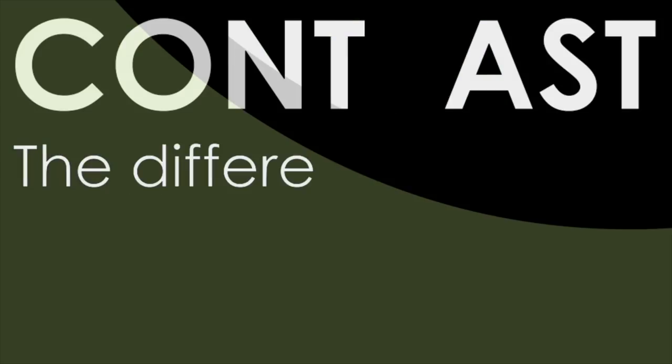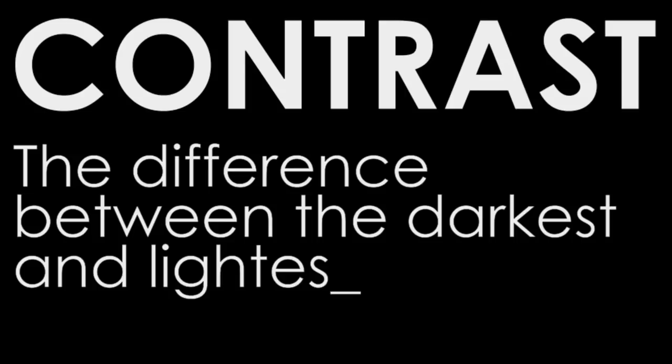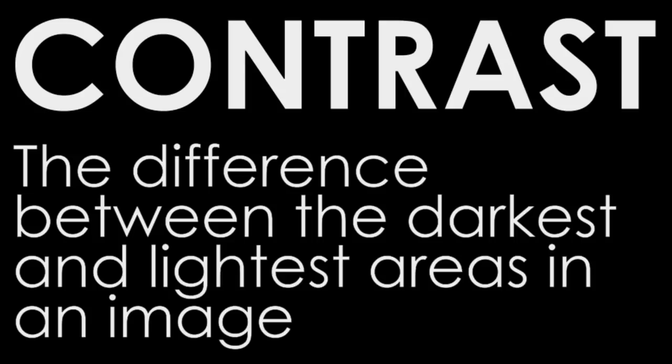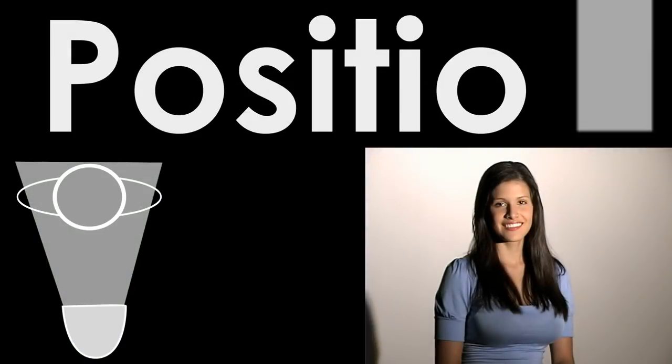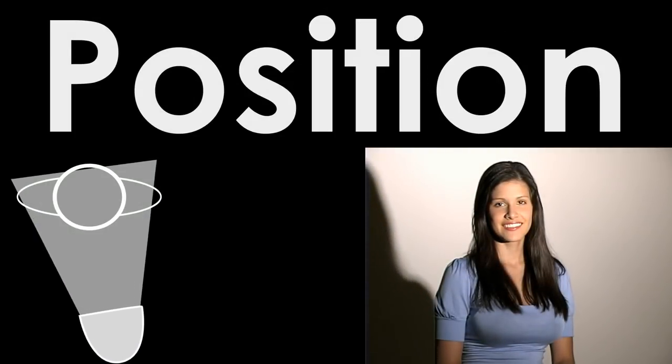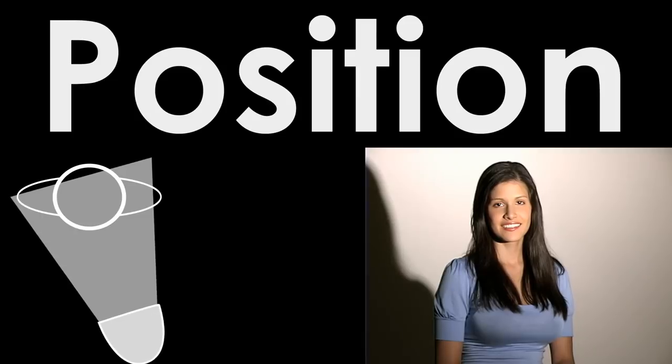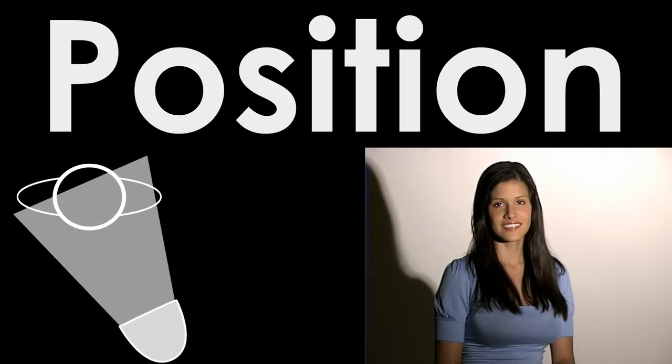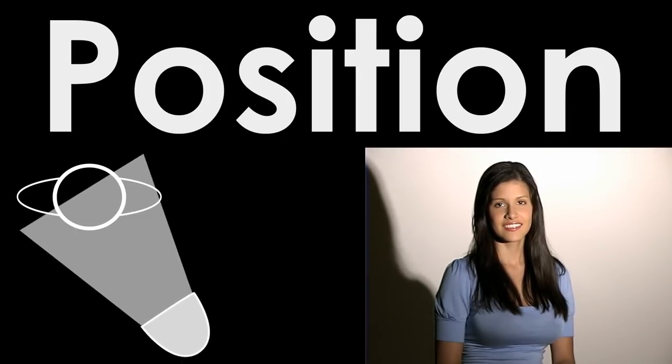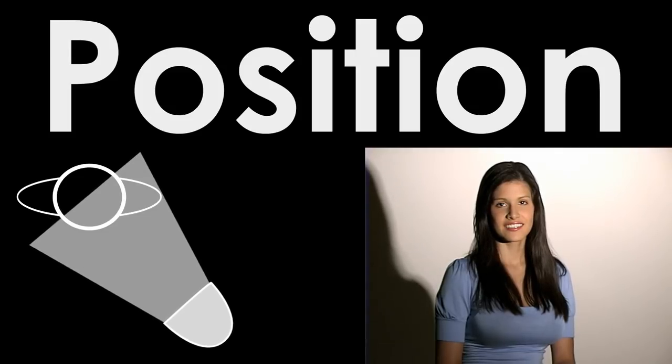Sometimes soft light is called diffused light and hard light is called harsh light. Contrast is the difference between the darkest and lightest areas in an image — the greater the difference, the higher the contrast. In much the same way you can change how hard or soft the light is by moving a light closer or farther from the subject, you can also change the contrast of your image by changing the position of the light.